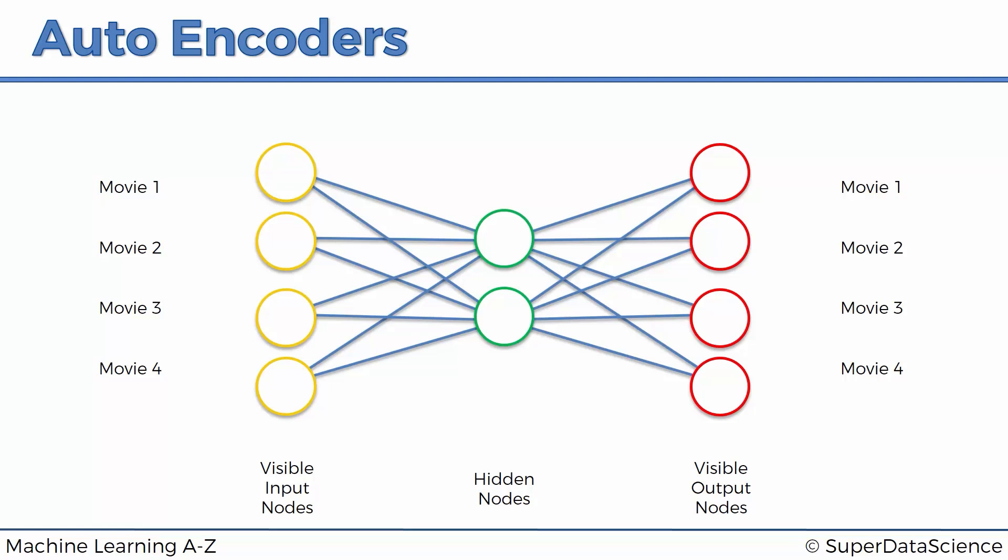As we can see we've got four movies over here and four movies over here. These are just movies that a person has watched and we're going to be encoding the rating that people have left for those movies. So one means a person liked that movie and zero means a person didn't like that movie and now let's have a look at how this information can be encoded through the autoencoder.